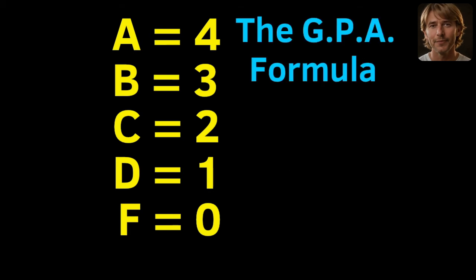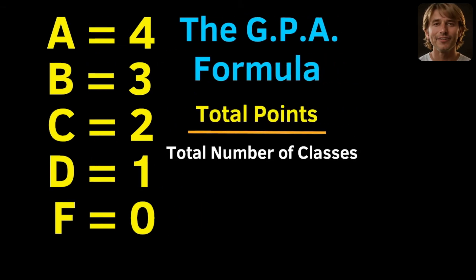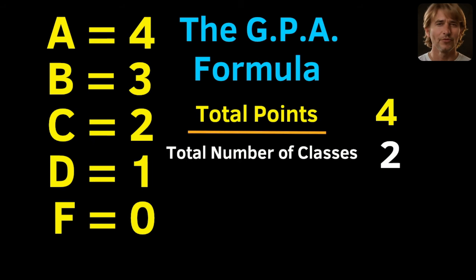The GPA formula is total points divided by the total number of classes. Let's say you were only taking 2 classes, and you earned 4 points and 0 points. The 4 points for earning an A, and 0 points for earning an F. 4 plus 0 equals 4. Since 4 divided by 2 equals 2, the grade point average is 2.0.